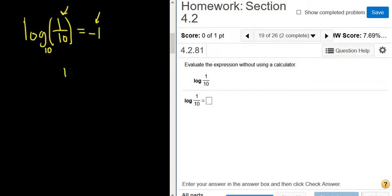And you can check that. 10 to the negative 1 is equal to 1 over 10 to the 1, because the sign changes, which is 1 over 10, so it checks. So the answer here is negative 1.